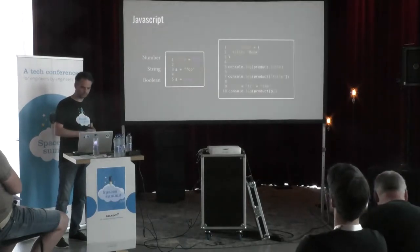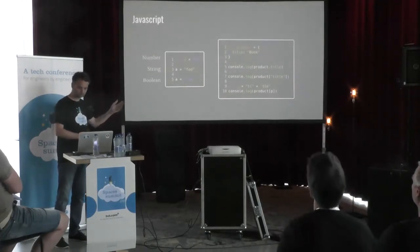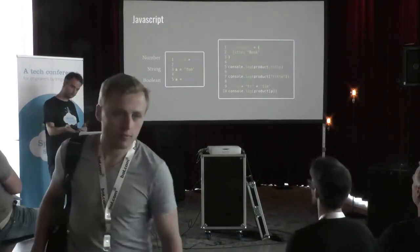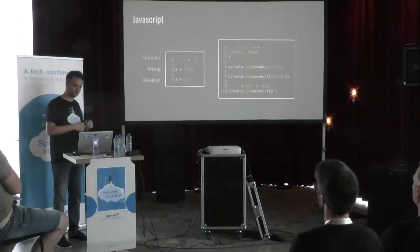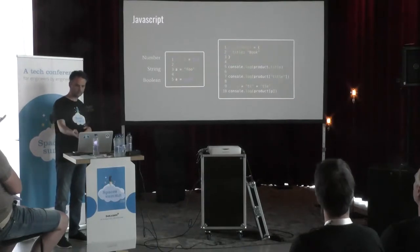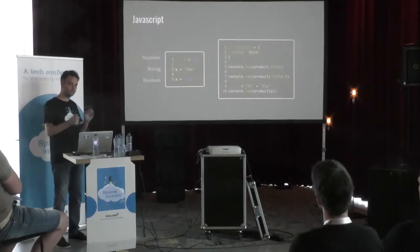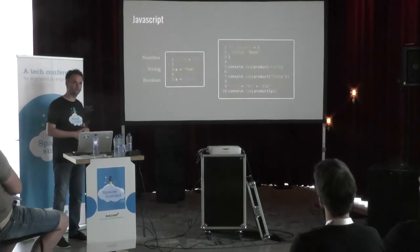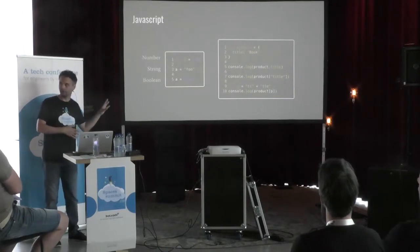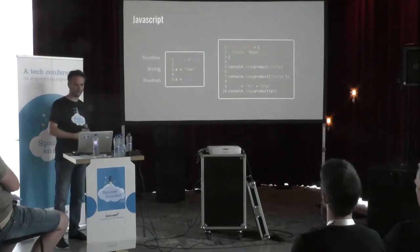Another example: you have an object called product and it has a property called title. I can say console.log product.title and it will print 'book'. But I can also use bracket notation with a string 'title' and it will still print 'book'. I can even construct a new string from bits and pieces that end up being 'title' and it still prints 'book'. This is really cool, but it's very hard to reason about in an automatic way, and even as a person it can be very hard.